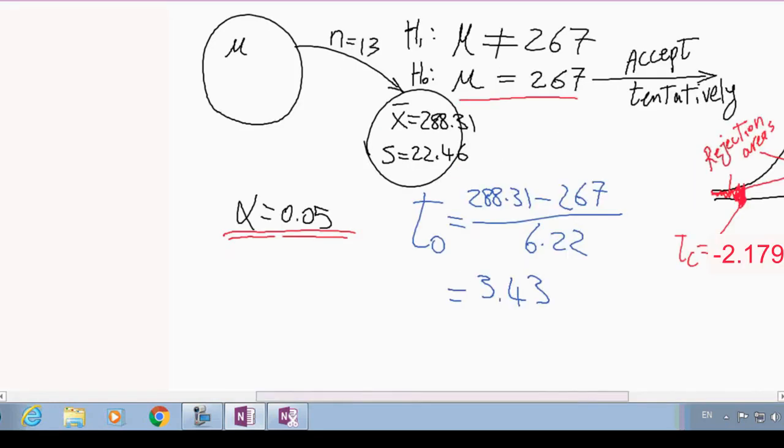So it is rejected. So here we will reject this claim and we will write complete sentences. We reject the claim that the mean is still 267 dollars and we will accept the claim that the mean of all of the students is not equal to 267 dollars anymore.